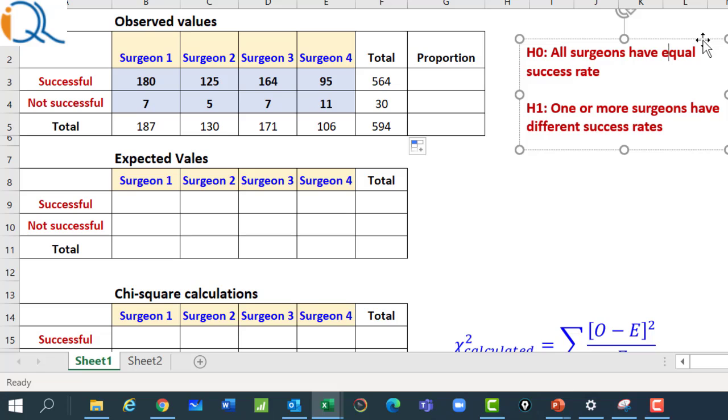The null and alternate hypothesis is written here. Under null hypothesis, all surgeons have equal success rate. And if null hypothesis is true, we can say that the best estimate of the average proportion successful would be 564 upon total operations 594. That is equal to 564 divided by 594. I can round it out to maybe 3 decimals. And proportion of not successful operations would be 30 upon 594. Remember, this is under null hypothesis. That is, if null hypothesis is true and if all surgeons have got equal success rates.